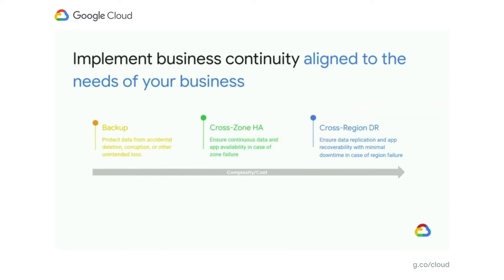Common HA and data protection solutions that enable business continuity include backups, cross-zone high availability, and cross-region replication and DR orchestration. These solutions form a spectrum with respect to the level of resiliency that they provide and their cost. The choice of any one solution for a workload depends on the business criticality of the workload, as well as the tolerance of that workload to downtime.